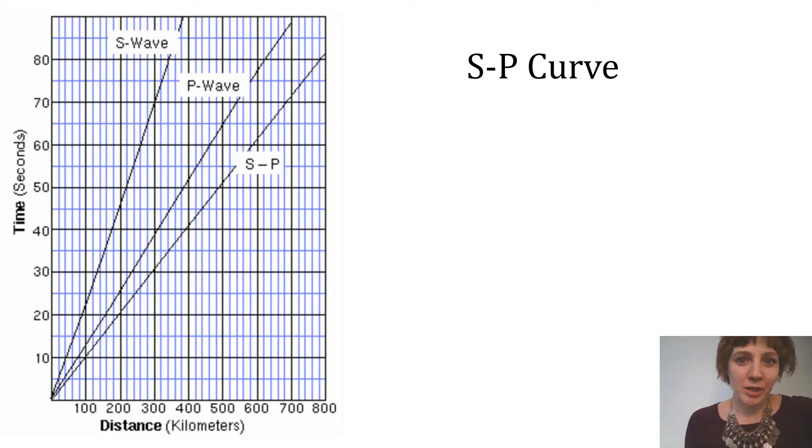Just as one more example, let's say that the travel time difference between your P wave and your S wave was 20 seconds. Then we would find 20 seconds on the S minus P curve, which looks like here. And looking down, we would see that that happens at a distance of 200 kilometers, which should agree with the old method.